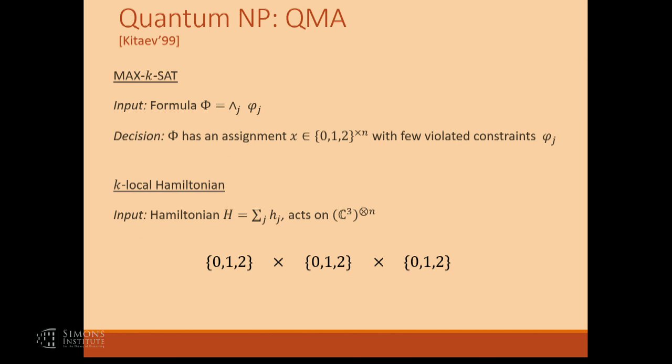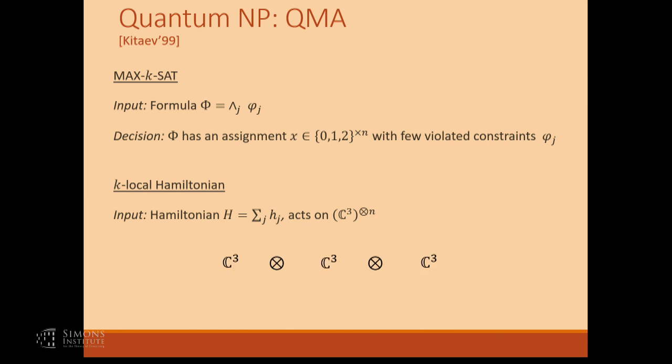To do it pictorially: in my three-coloring example, the state space was three colors for the first vertex, three for the second, three for the third. The formula imposes constraints on that state space — these two should take different values. The quantum case is exactly the same except that you make things continuous. Instead of a discrete state space with three possible values, you'd have the vector space C^3 with dimension three. Instead of taking the cross product of state spaces, you take the tensor product. The Hamiltonian puts constraints on the state space.